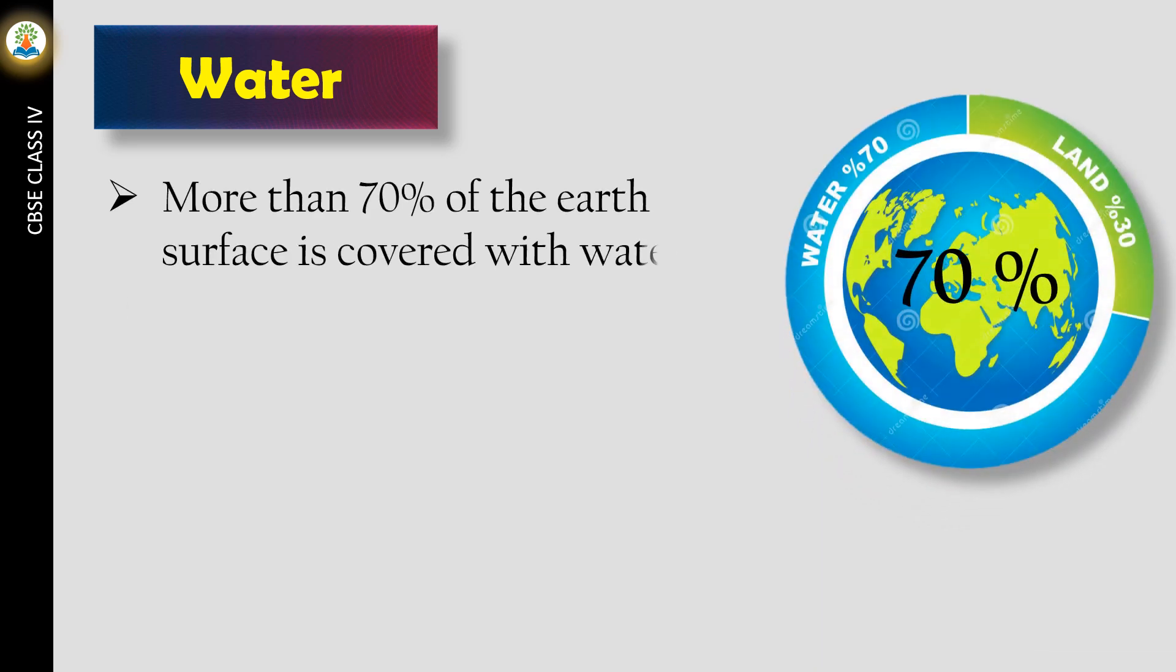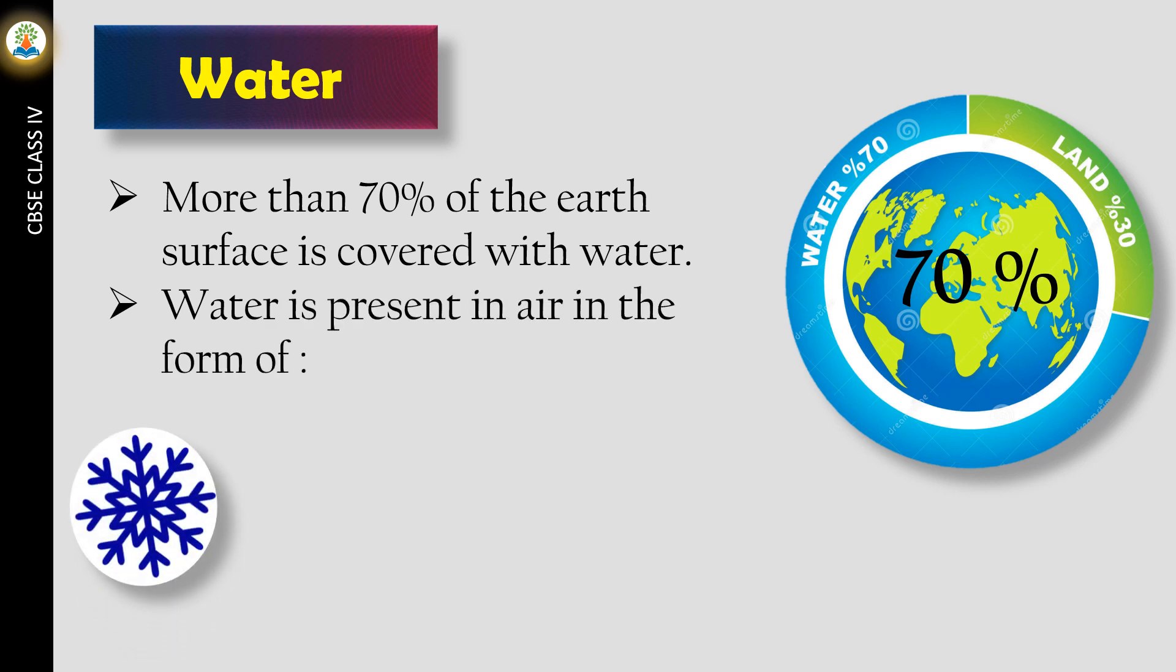More than 70% of the earth's surface is covered with water. Water is present in air in the form of snow, in the form of liquid in seas, oceans, rivers, and in the form of water vapor in the air.